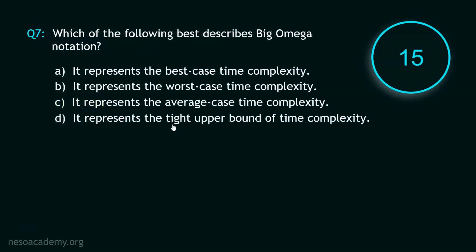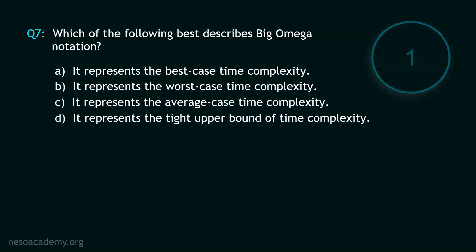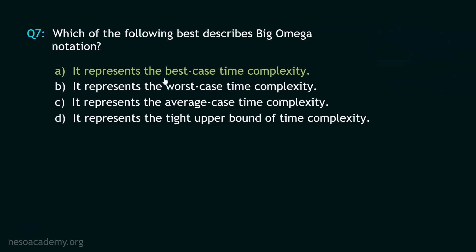Now let's move to question number 7. Your time starts now. Stop. Big Omega notation describes the best case time complexity — it is used to represent the best case time complexity — and hence option A is the correct option.